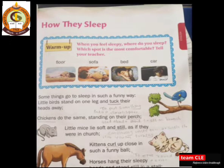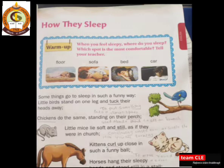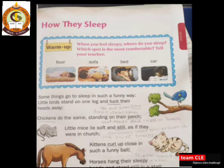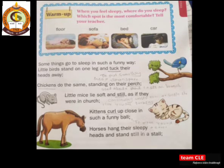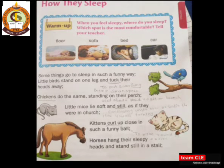Some animals go to sleep in such a funny way. Little birds stand on one leg and tuck their heads away. Chickens do the same, standing on their perch. 'Tuck' means to put something into a small space. 'Perch' is a word used to describe sitting on a branch. Little mice lie soft and still as if they were in church. Kittens curl up close in such a funny ball. Horses hang their sleepy hats and stand still in a stall.